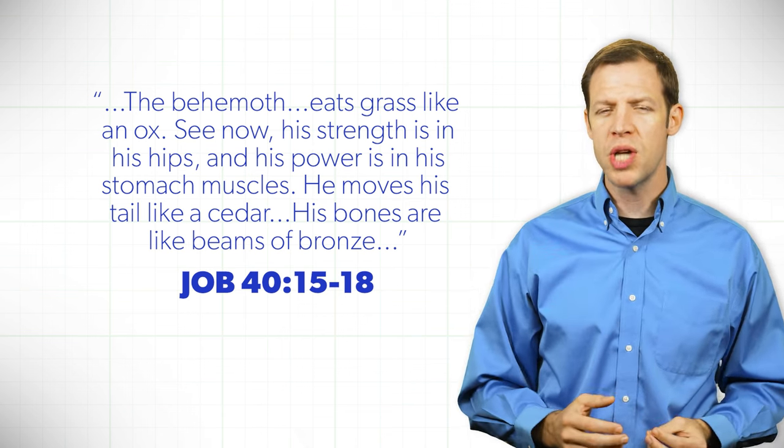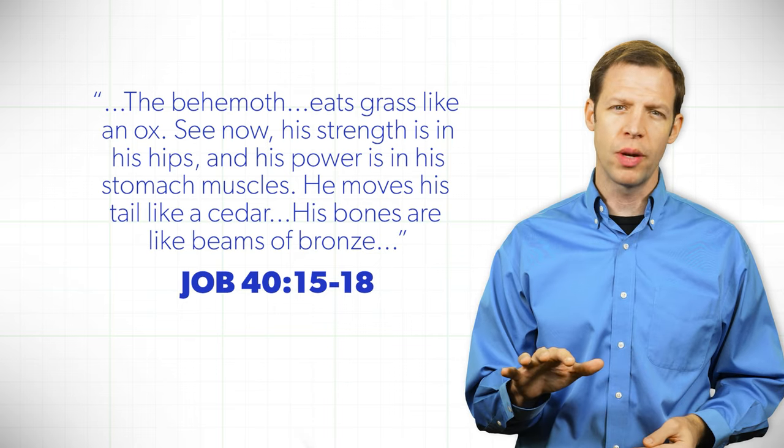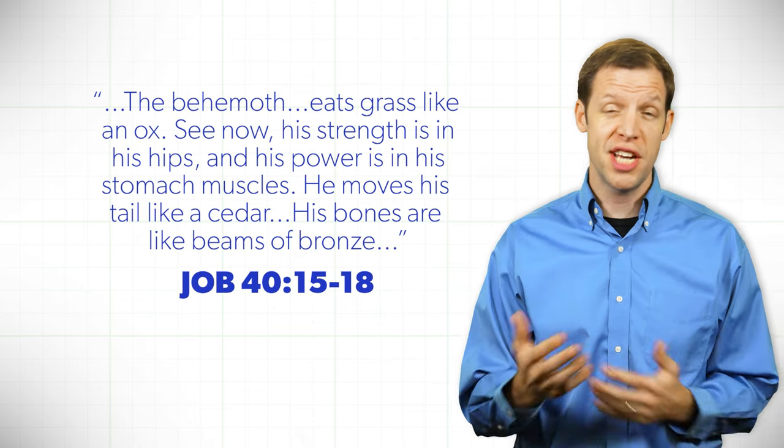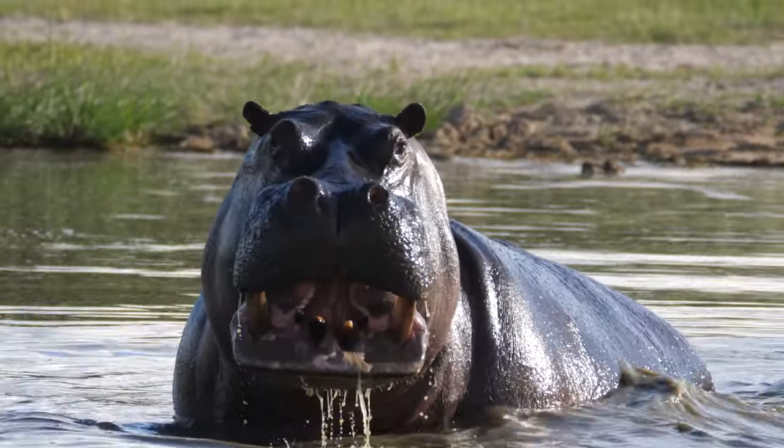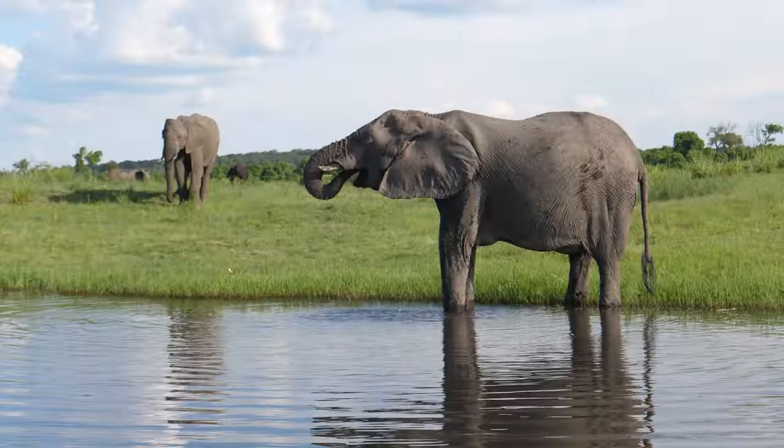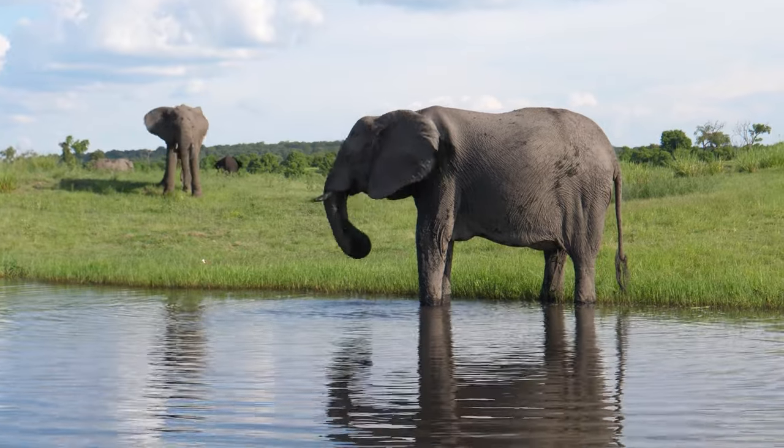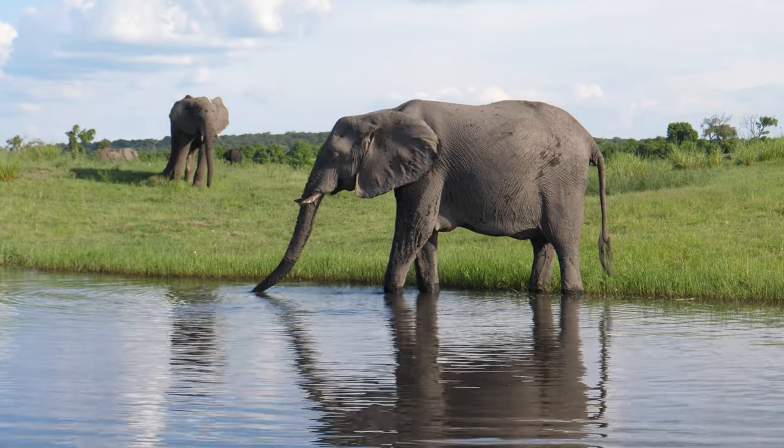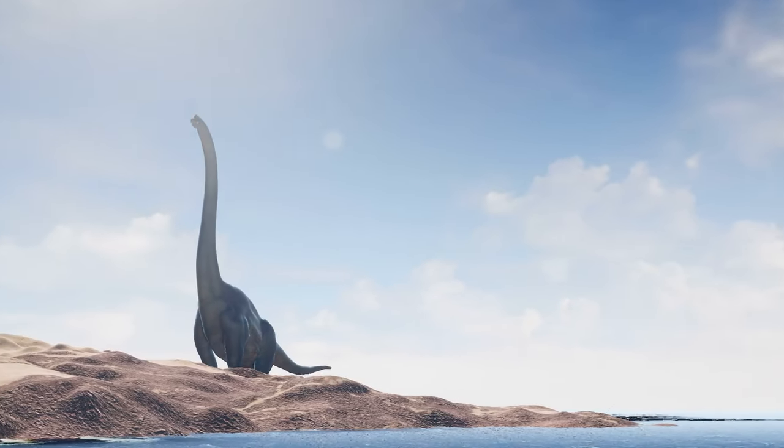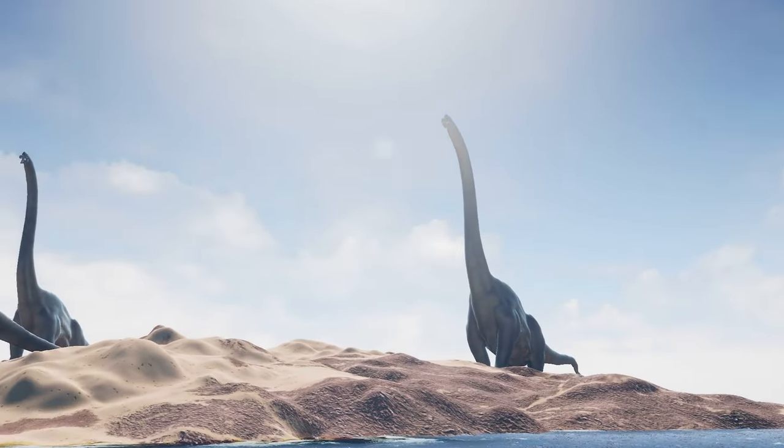You read that in the book of Job, chapter 40, verses 15 and following. Some people have suggested that this has got to be an elephant or a hippopotamus. It doesn't make any sense. Elephants and hippopotamuses don't have huge tails that swing like a cedar. What would? A huge plant-eating dinosaur matches the description perfectly.